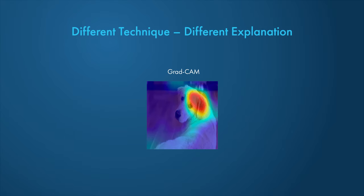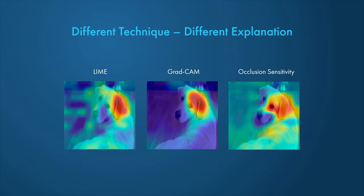You can observe in the explained image that the mapping of the most important features slightly differs between explainability techniques. This is because the underlying methodology is different.